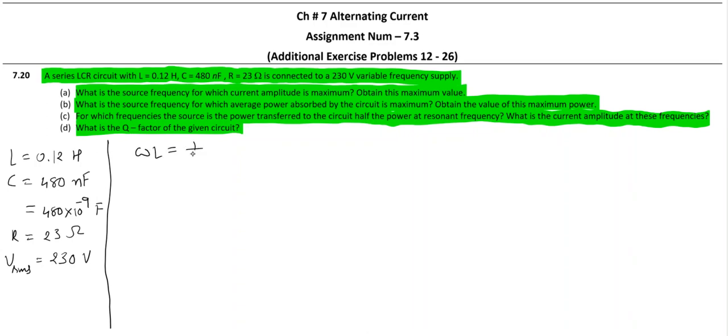So to get answer of first one, you will have to carry out this calculation: find out resonance angular frequency, and from that find out resonance frequency. This is the answer of first one A, at this frequency current will be maximum.